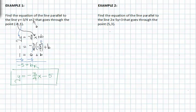In example two, we're asked to find the equation of the line parallel to the line two x minus five y equals three that goes through the point five, three. Notice that this equation of the line is not in slope-intercept form. It's in standard form.